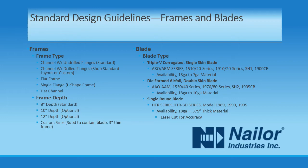On the other end of the spectrum, we can customize the depth of our frame for industrial butterfly dampers to ensure the blade will not protrude out of the frame in any way, resulting in thicknesses of up to 60 inches. In most cases, however, our industrial dampers use an 8-inch deep channel frame with a thickness between 14 gauge and 1/4 inch.